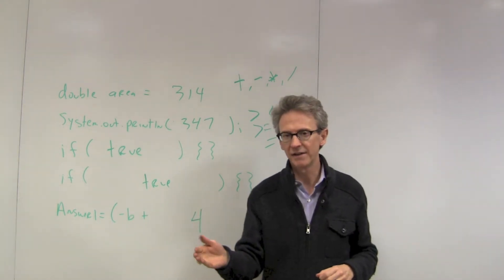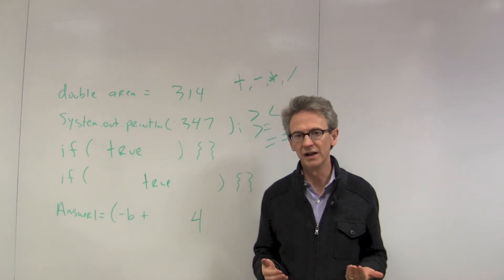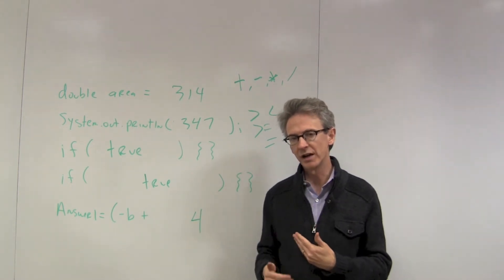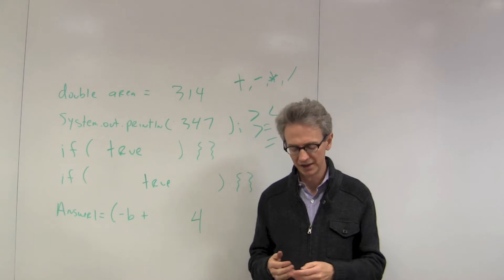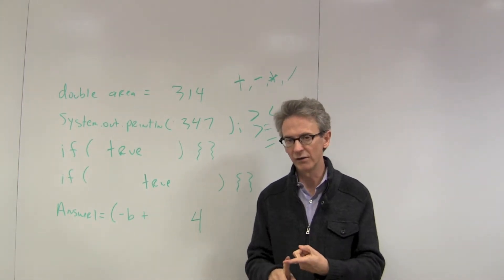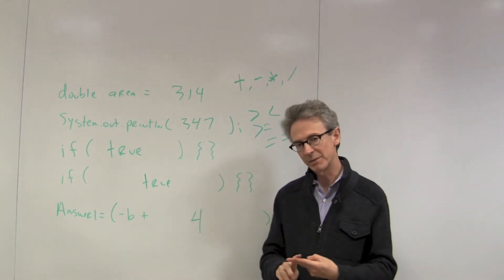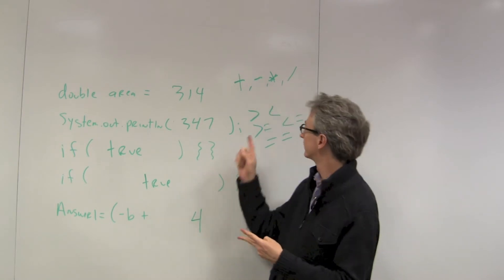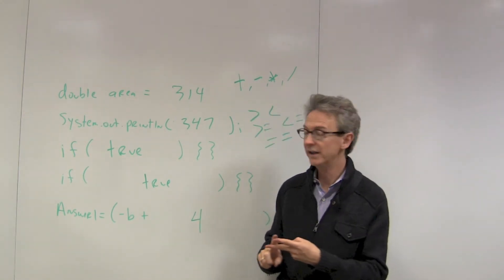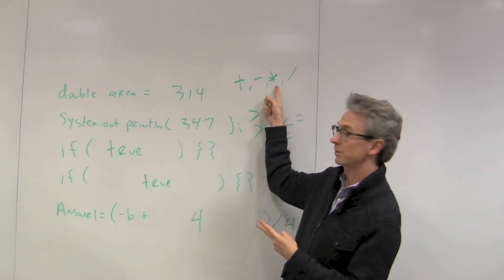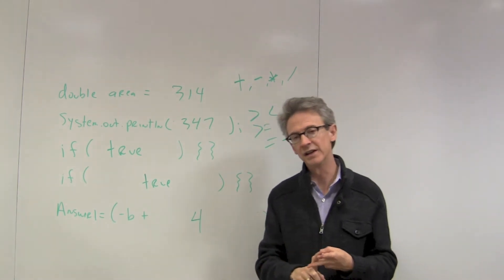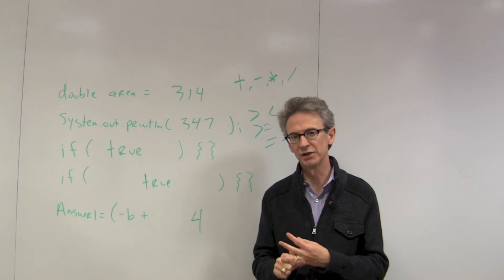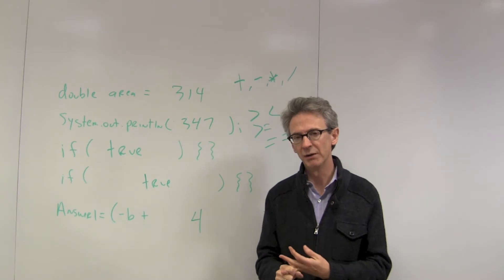That's the way expressions are evaluated. There's an order of precedence. Parentheses go first — that's identical to math. Then math expressions go in the order you learned in math: multiplication and division come next, then addition and subtraction. And then the boolean expressions come after that.